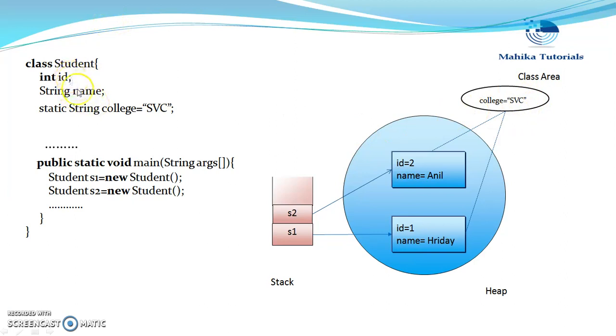Now in this example we have two instance variables id and name, and in this main method we are creating the two objects of Student class. These are S1 and S2.